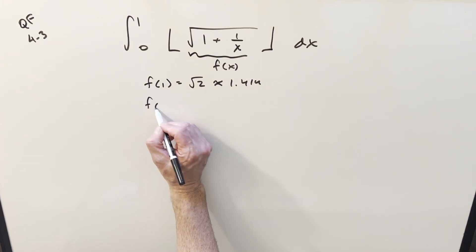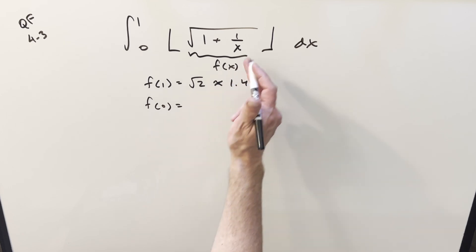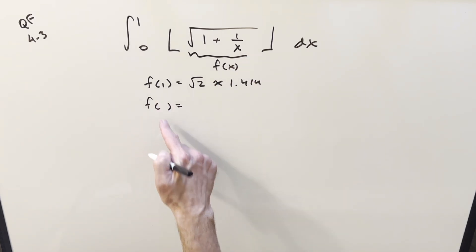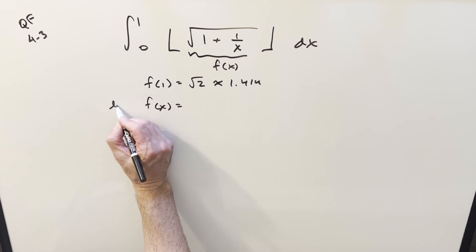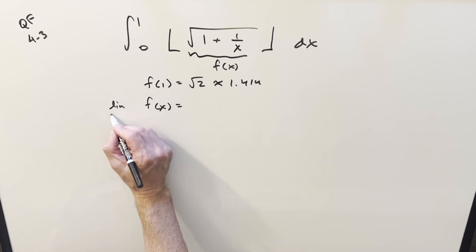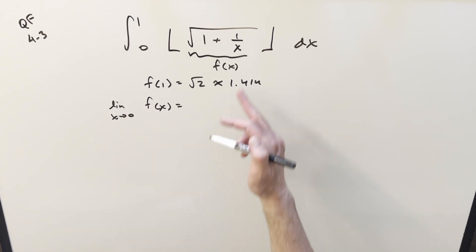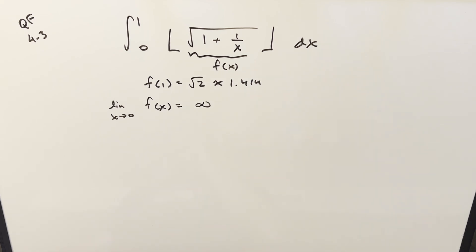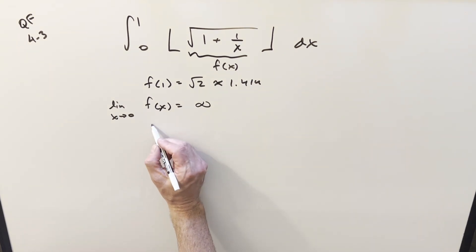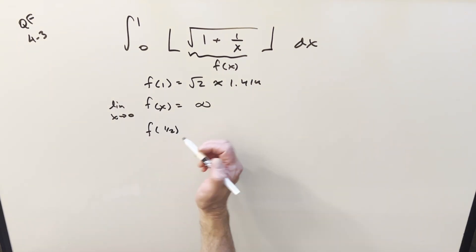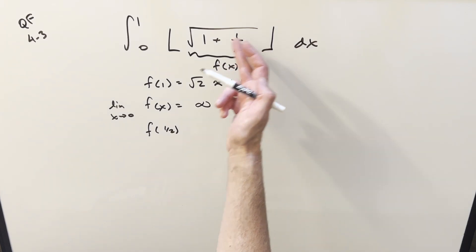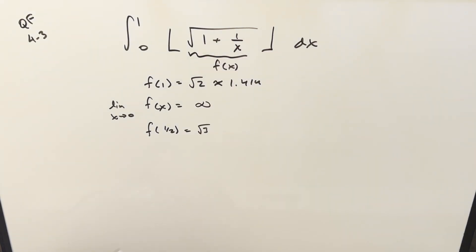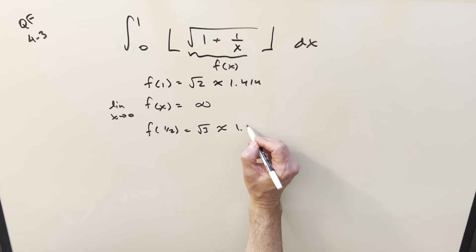For f of 0, that's a problem since we're dividing by 0. But looking at this as a limit as x goes to 0, this is going to infinity and the whole thing goes off to infinity. Let's look at f of 1 half — you plug 1 half in there, you're going to get the square root of 3, which is something like 1.732.